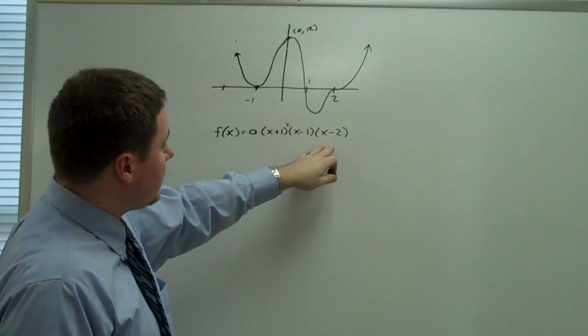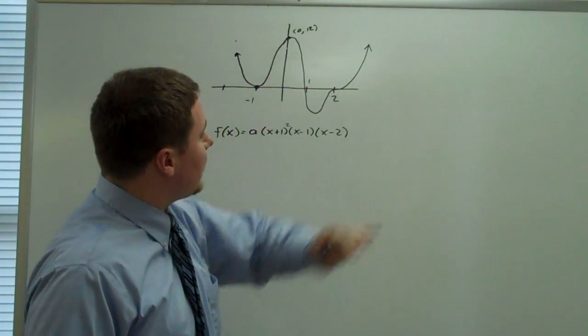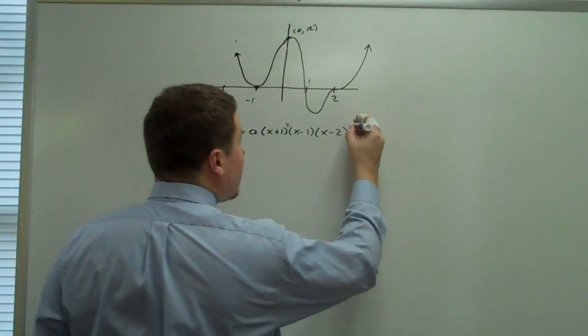And then this last term, it seems like it wants to go up, it levels off, and then it keeps going. So that's going to be multiplicity 3.